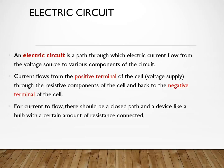For current to flow, there should be a closed path and a device like a bulb with a certain amount of resistance connected. Very, very important that you put a device that will consume some energy in the circuit, which means a device that is resistive, so that the pressure at the beginning end of your circuit is not the same as the pressure at the end point of your circuit. Because if the pressure is the same, then that particular circuit is a short circuit and current will never flow. It will cause a short circuit, it will cause a spark.